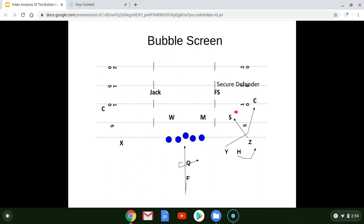The Sam now must fit over the top of the Z's down block, his crack, fit over the top here. The corner must fit outside of Y's kickout block. So they cover these two gaps. If they do not,